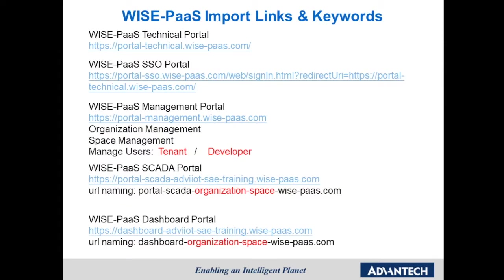Here are some essential links in WISE-PaaS. The first is the WISE-PaaS Technical Portal, where the User Guide and API Usage Guide can be downloaded. The next is the WISE-PaaS Single Sign-On Portal — please sign in at this site. The third is the WISE-PaaS Management Portal, where organization, space, and user account management can be done. The last ones are WISE-PaaS SCADA Portal and WISE-PaaS Dashboard Portal. Note that the URL naming may differ based on your organization and space name. Configure your project and SCADA nodes at SCADA Portal and design your panel at Dashboard Portal.